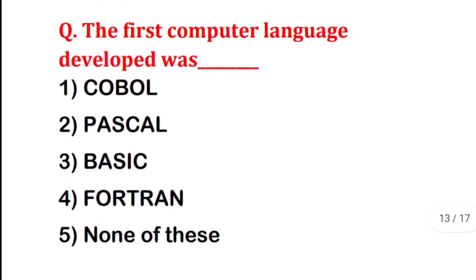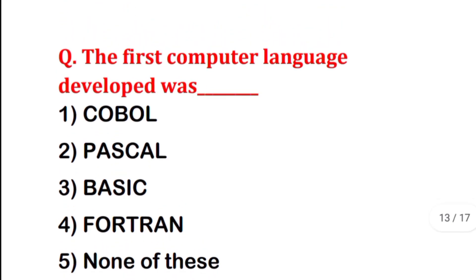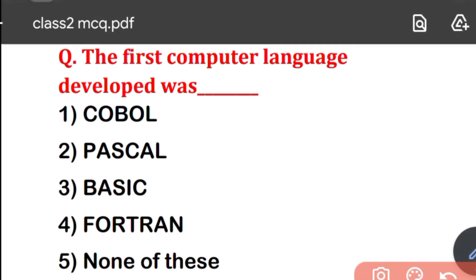The first computer language developed was which one? Options are: COBOL, Pascal, BASIC, Fortran, or None of these. The correct answer is the fourth option — Fortran. Fortran was the first computer language developed.